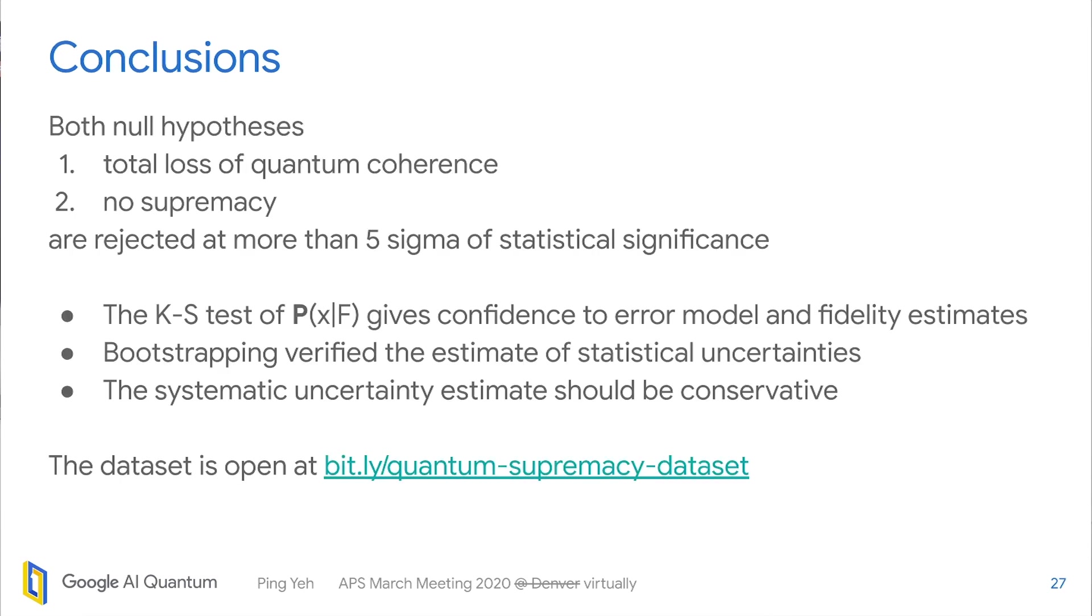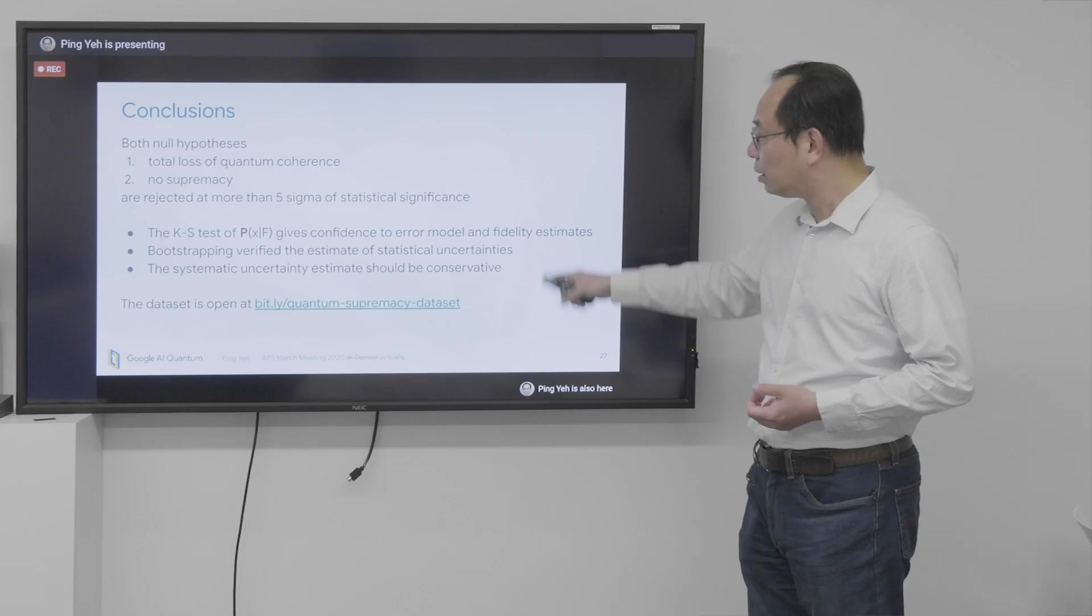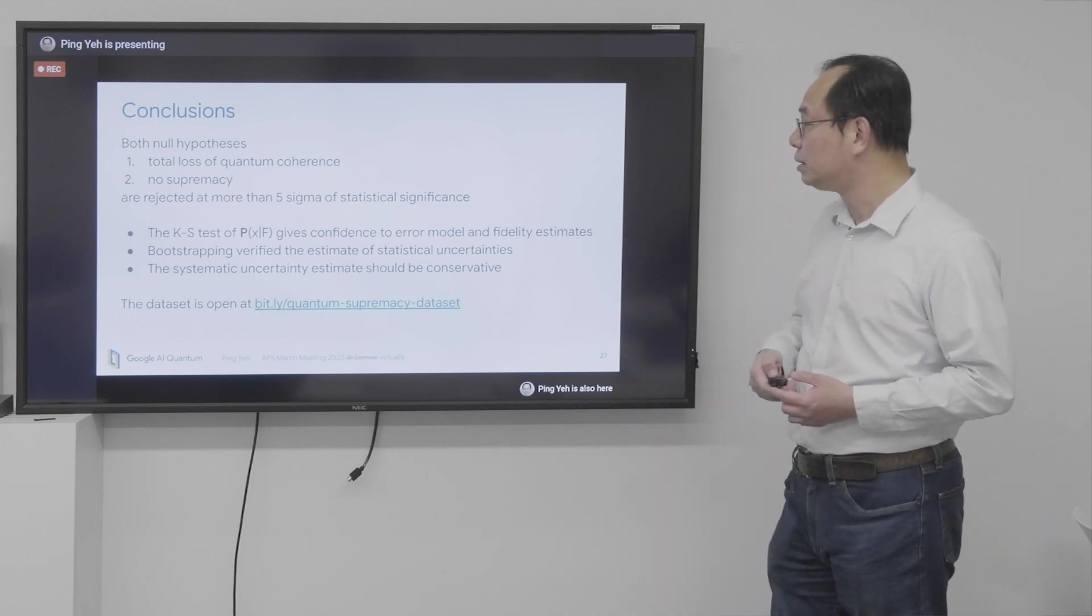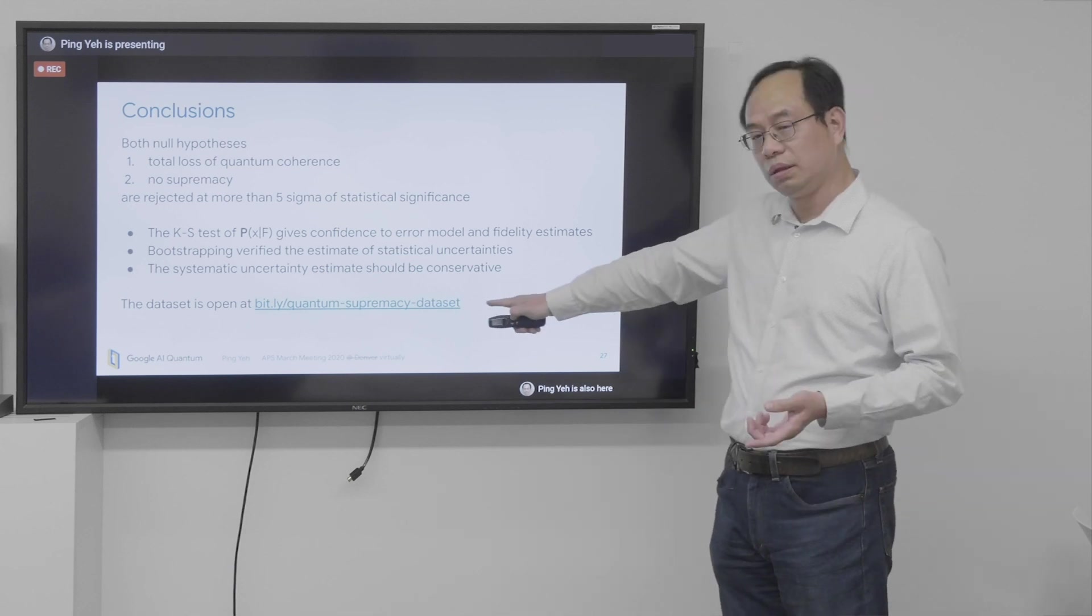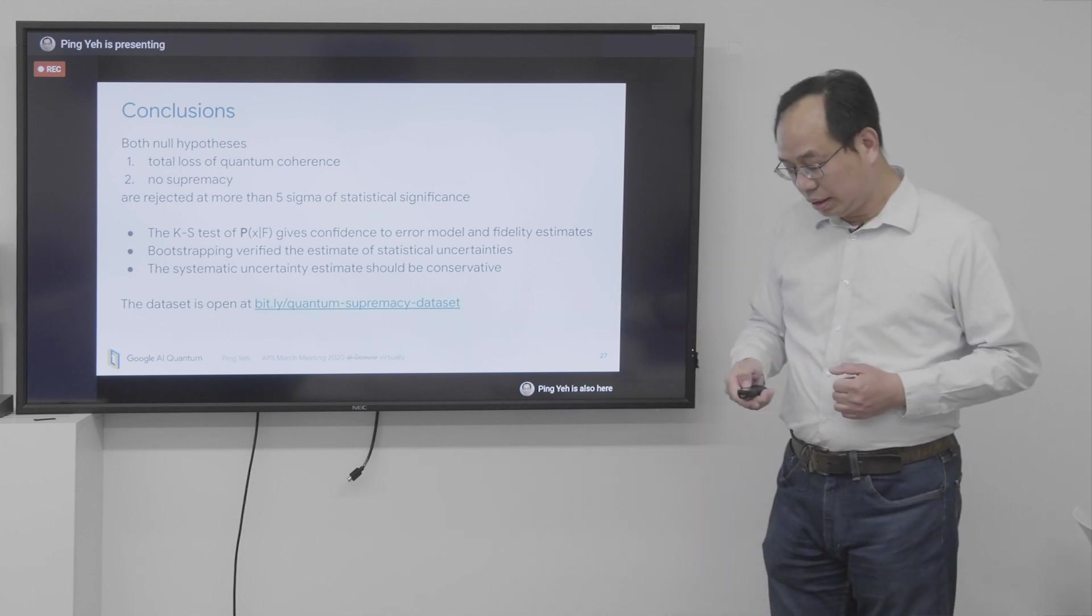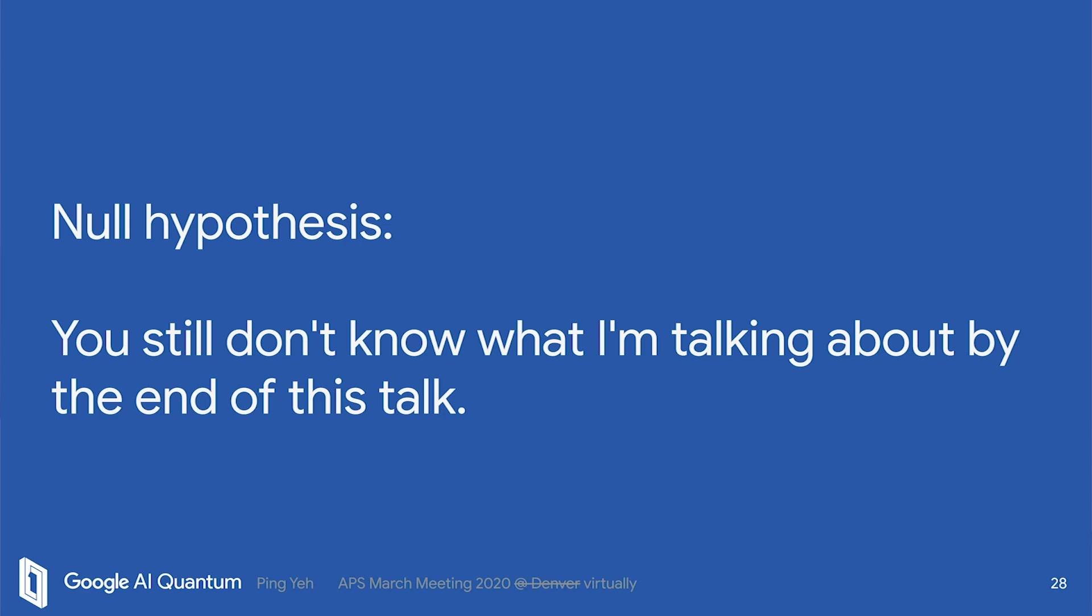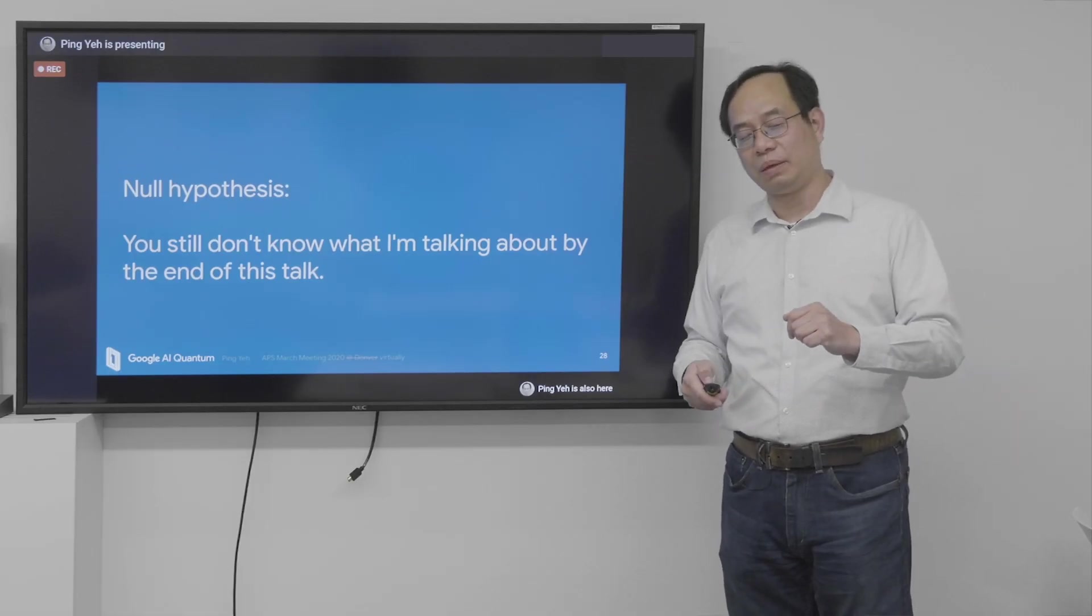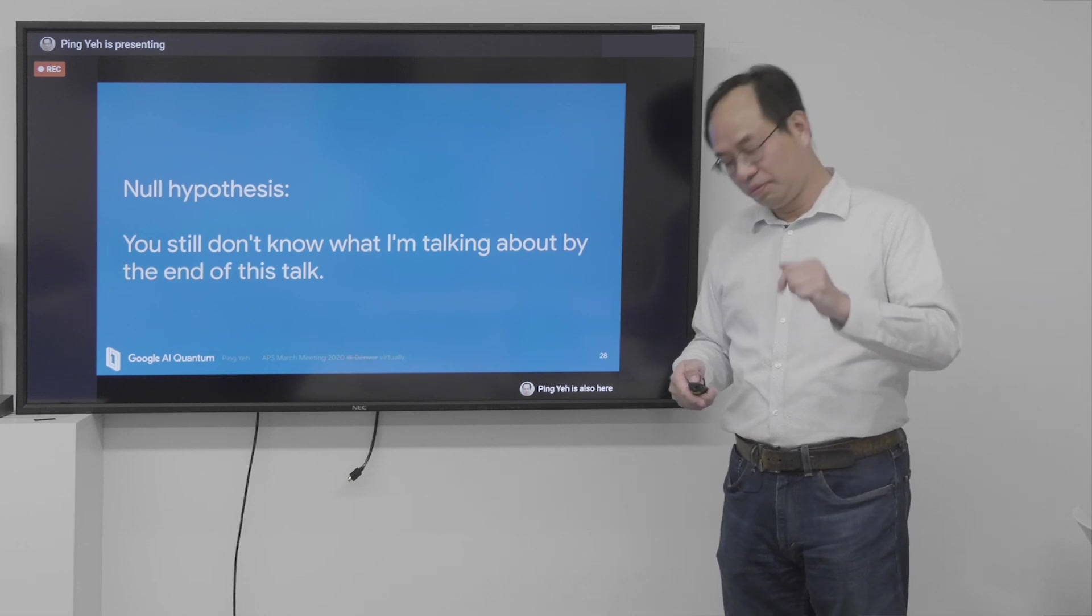So conclusion. Those null hypotheses are rejected with more than 5 sigma of statistical significance. And along the way, I've done several checks that give us some confidence on those numbers. And the dataset is available here. And coming back to the null hypothesis of my talk. So please help me reject this hypothesis by leaving comments below. Thank you very much.